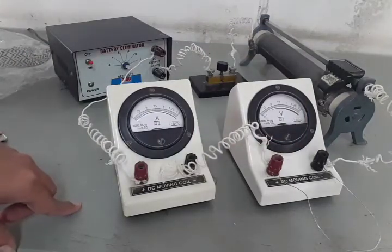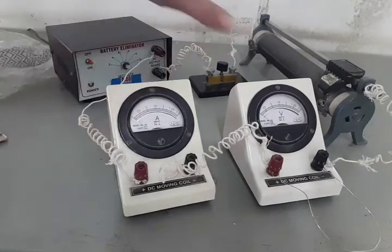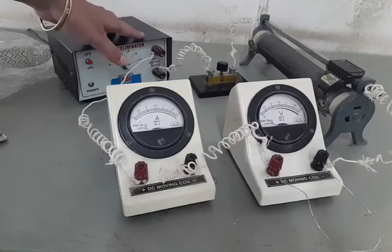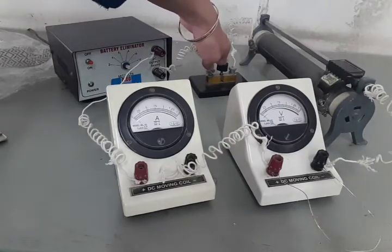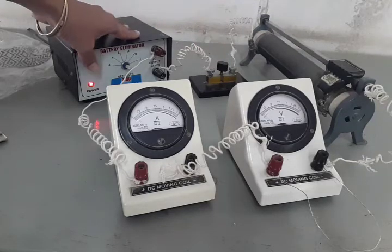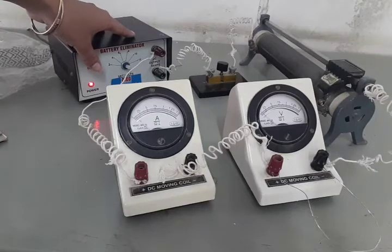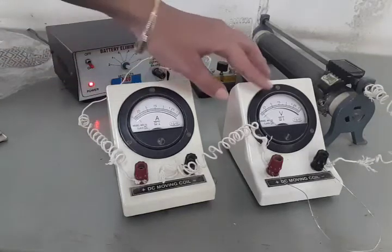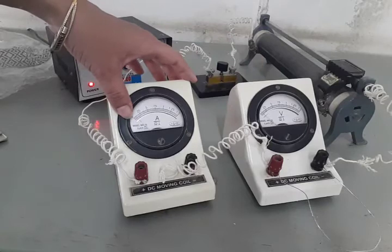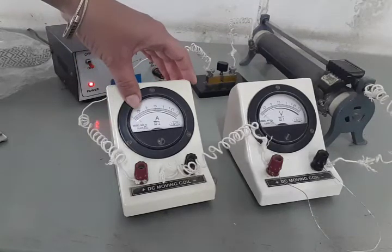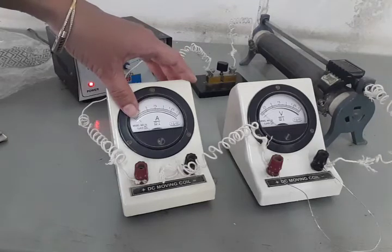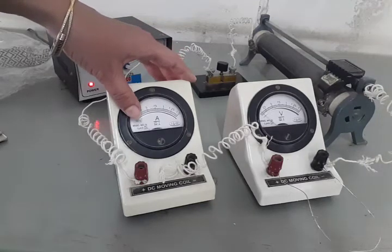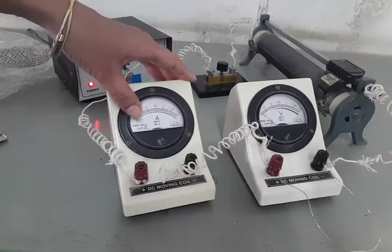Now what we have to do, when we have to take the readings, then this key should be in, so that current flows, this battery should be on. So as soon as we switch on this battery, in the ammeter and voltmeter, the pointer will move to some divisions. What we have to do, we have to start taking divisions and we have to multiply with the least count of these apparatus.